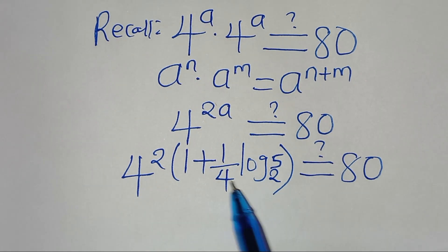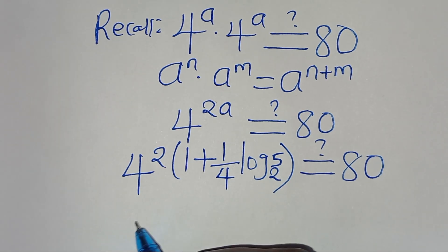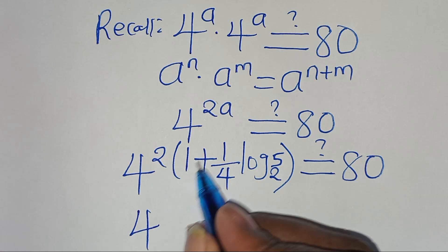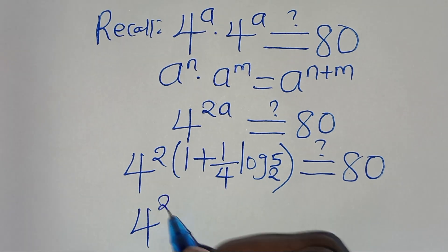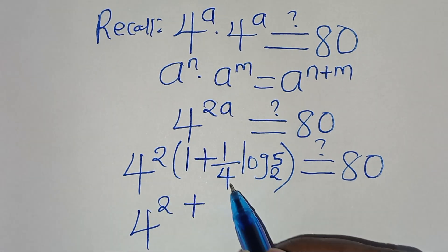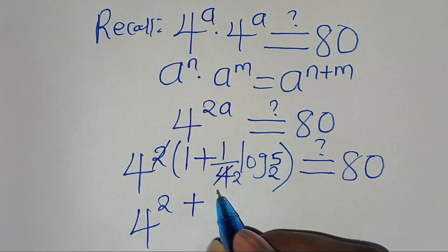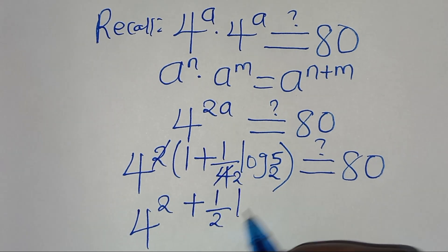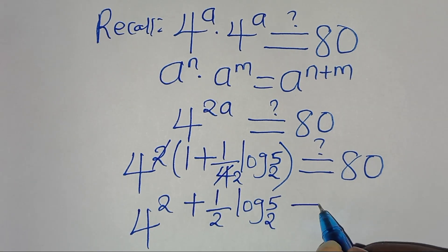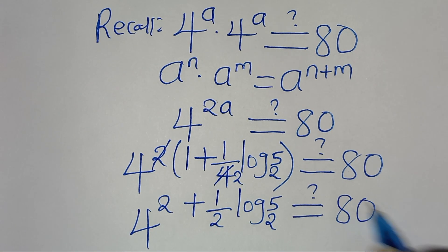Opening the parentheses in the exponent, we get 4 to the power of 2 times 1, which is 2, plus 2 times one-quarter — the 2s simplify giving one-half — times log₂5. This should give us 80.